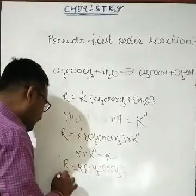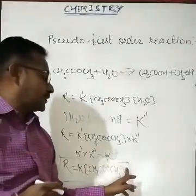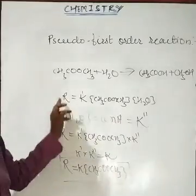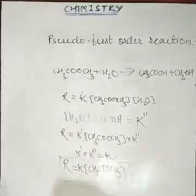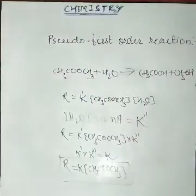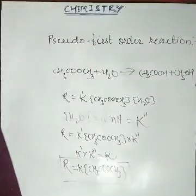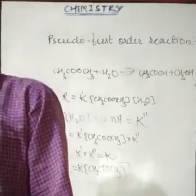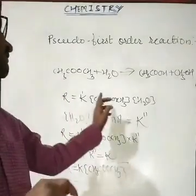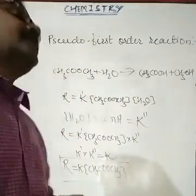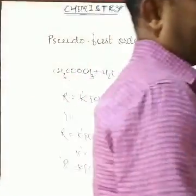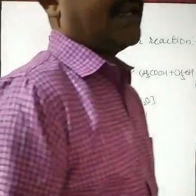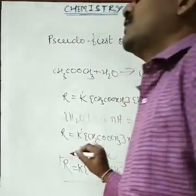So the rate expression becomes R = K' × [CH₃COOCH₃], where K' × K(H₂O) = a new constant K. The final expression is R = K × [CH₃COOCH₃]. The expression appears to be first order (power 1). So the reaction appears second order but is actually first order — this is because the solvent is taken in large excess, keeping its concentration constant, and therefore the reaction is called a pseudo first order reaction.